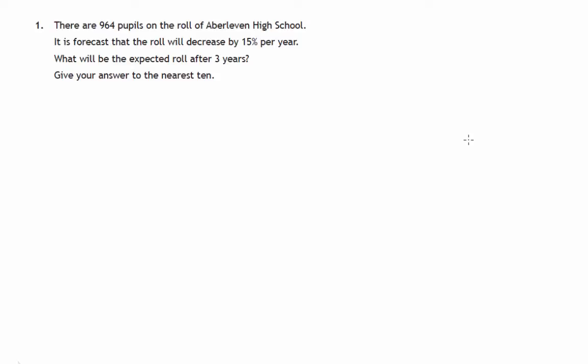This is question 1 from paper 2 of the 2014 National 5 Maths exam. We're told the roll of a school is 964 pupils and that it's going to decrease 15% per year. We need to calculate its roll after three years.